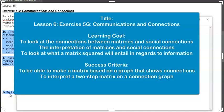This is Lesson 6 Exercise 5G Communications and Connections. The learning goal is to look at the connections between matrices and social connections, the interpretation of matrices and social connections, to look at what a matrix squared will entail in regards to information. The success criteria is to be able to make a matrix based on a graph that shows connections and to interpret a two-step matrix on a connection graph.